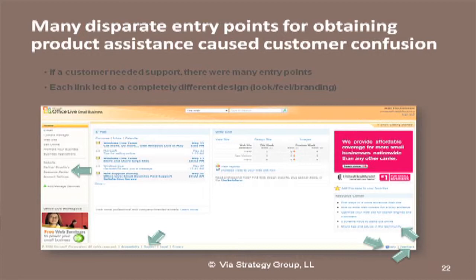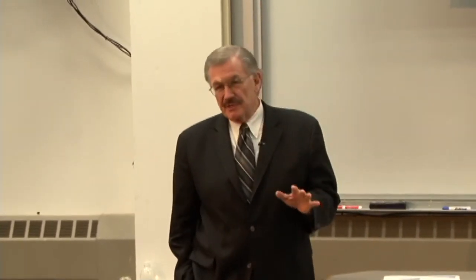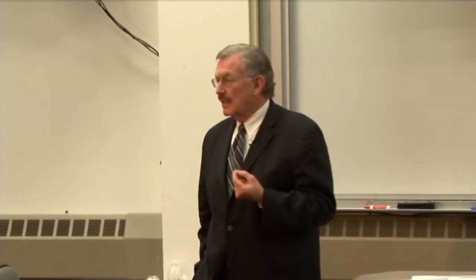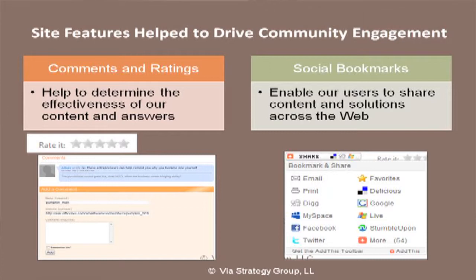So they created a single, integrated website and built a community around it using social media techniques — one website you could go to. Notice the three things at the top: find it, ask it, and answer it. If you had a question, you clicked on find it in one place. You could get an answer from a Microsoft support person, from the knowledge base, or from another user — but it was invisible to you where it was coming from. If you couldn't find it, you could ask a question, basically posting it to the community including Microsoft people. One place, three clicks, very simple, everything looks the same.